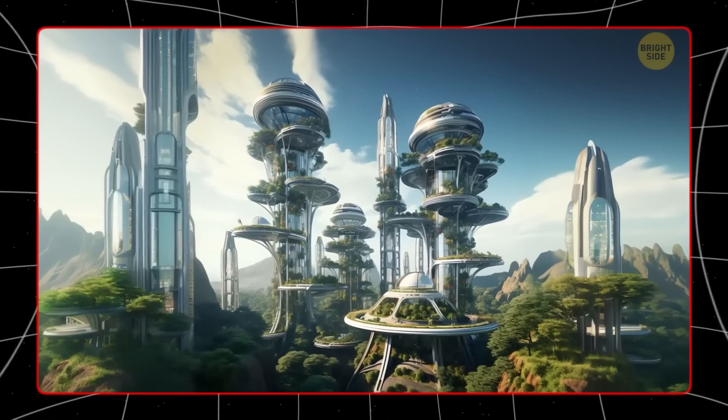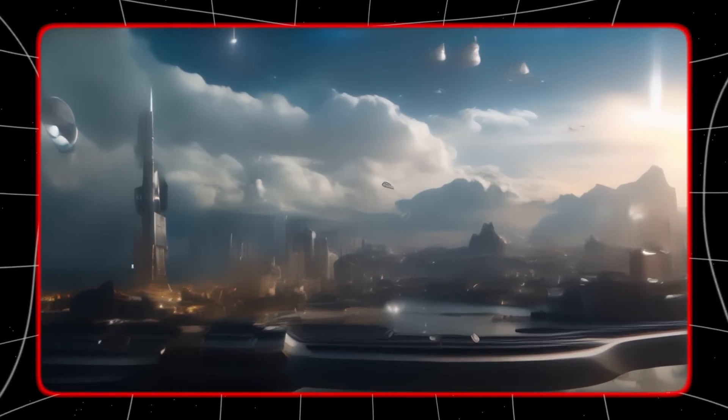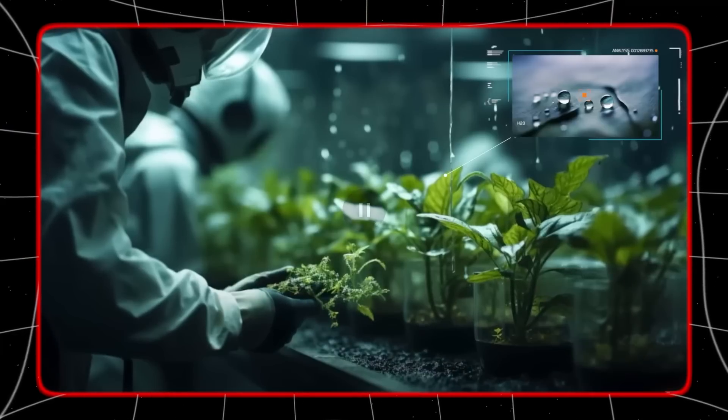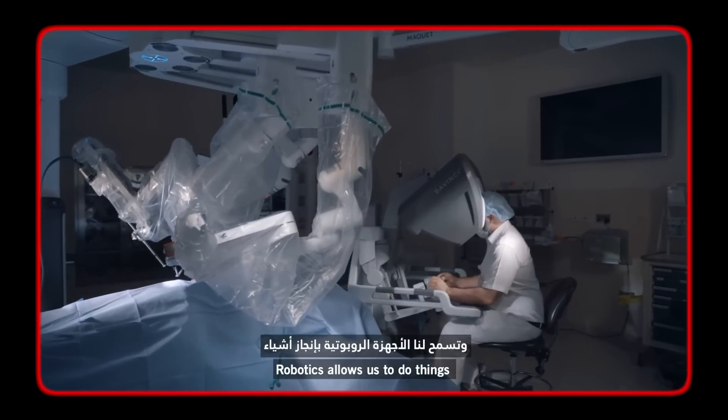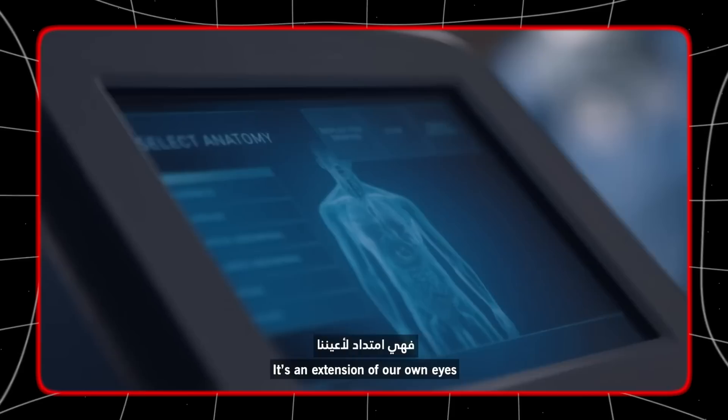This predicted job displacement may surpass the historical shift from agriculture-based to industrial economies that occurred in the 1900s in the United States and Europe. Various roles such as driving, operating machinery, and certain legal tasks are expected to be automated to a greater extent, leading to the redundancy of many jobs. To cope with this shift, affected workers will need to undergo retraining for new occupations to sustain themselves.